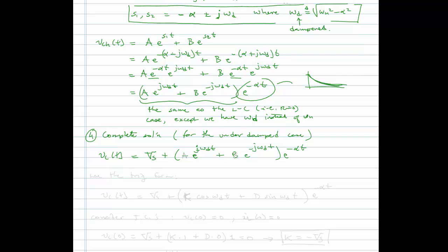Recall that when we originally solved for the LC response, we used A·e^(j·omega_N·t) + B·e^(-j·omega_N·t), and after applying initial conditions the two complex exponentials combined to produce purely a cosine or sine wave. We then solved using a weighted cosine and weighted sine instead, and that's what I'd like to do here — avoid the complex form since it's messier.